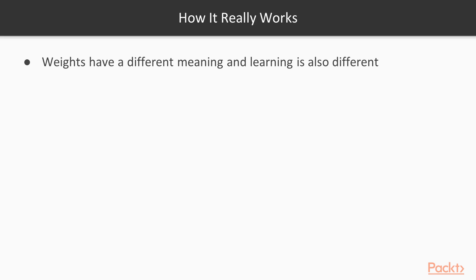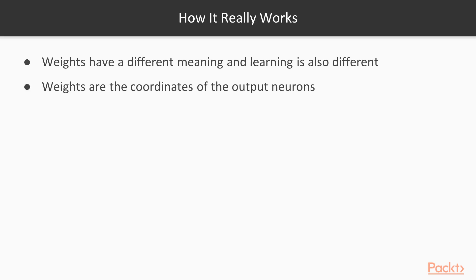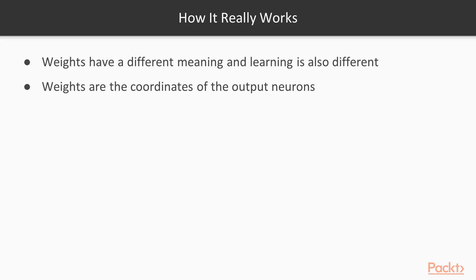How do SOMs really work? It's important to note that weights have a different meaning in SOMs, and the learning scheme is also different from common neural networks. We must consider the weights as the coordinates of each output cell or neuron, so we represent each output neuron with a weight vector that has similar dimensions as the input features. The learning scheme is competitive learning, which means output neurons must compete to be activated. After winning, they are called the winner.